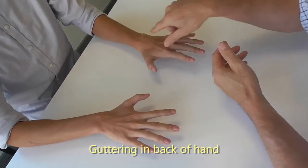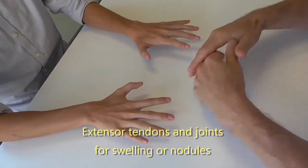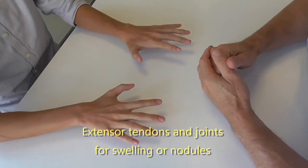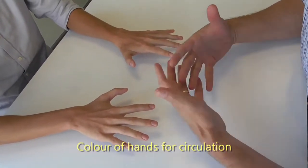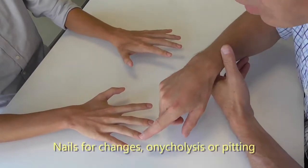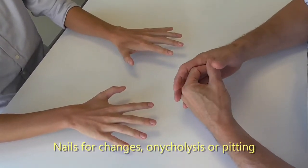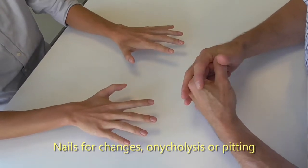Looking at the dorsum of the hand, looking at the extensor tendons and the joints to see if there's any swelling. Looking at the color of the hands in terms of circulation, and also at this point looking at the nails to see if there's any nail changes, onycholysis, or any pitting in the nails.